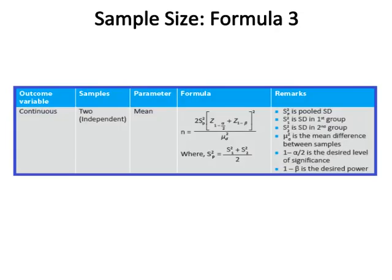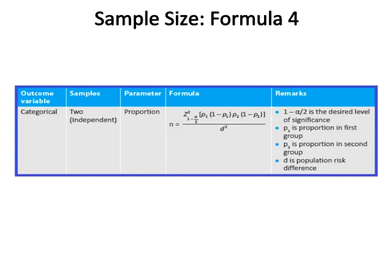Sample size formula three: the outcome variable is continuous, the sample is two of independent nature, and the parameter is mean. The formula is given in the above table, where Sp² is the pooled standard deviation, S1² is the standard deviation in the first group, S2² is the standard deviation in the second group, μd² is the mean difference between samples, (1 - α/2) is the desired level of significance, and (1 - β) is the desired power.